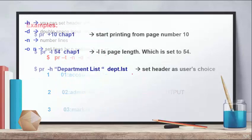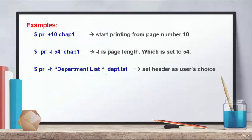Here are some examples. PR plus 10 followed by a file name means it will start printing from page number 10. Next is PR minus L, which sets the page length — for example, PR minus L 54 sets the page length to 54 lines.